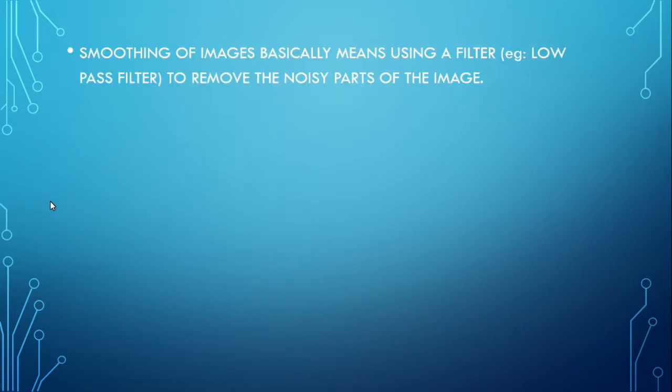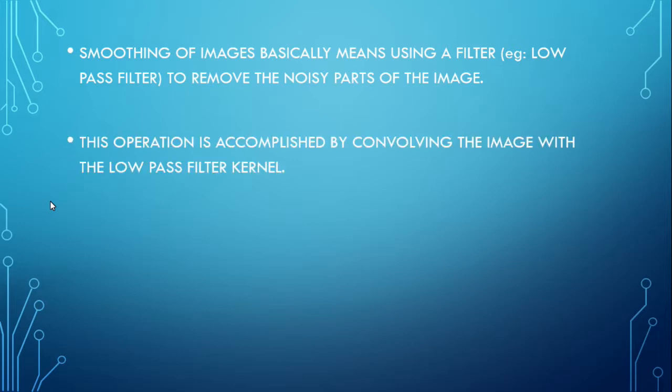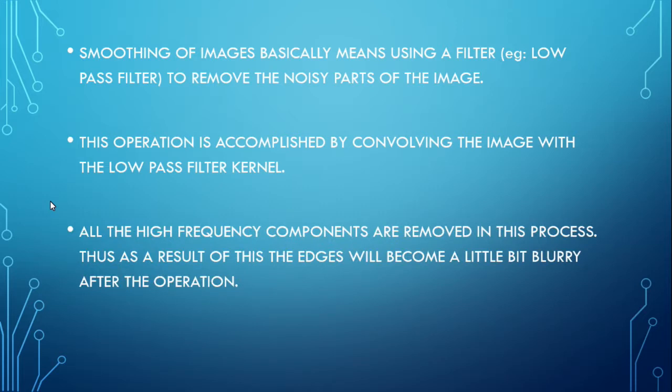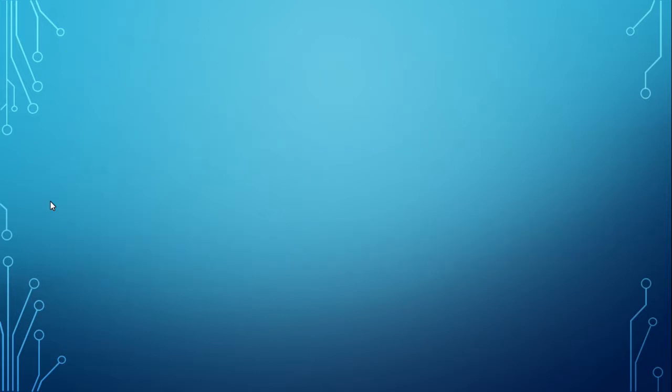Next, we will see about smoothing of images. Smoothing of images basically means using a filter, e.g. low-pass filter, to remove the noisy parts of the image. This operation is accomplished by convoluting the input image with the low-pass filter kernel. All the high-frequency components are removed in this process. Thus, as a result of this, edges will become a little bit blurry after the operation.